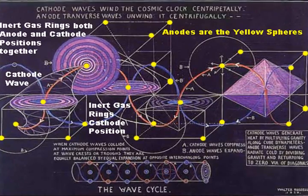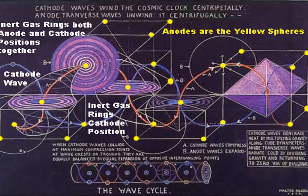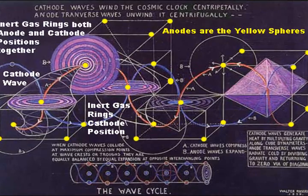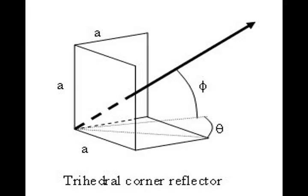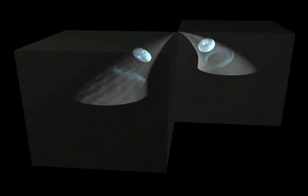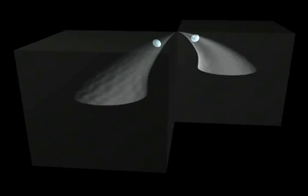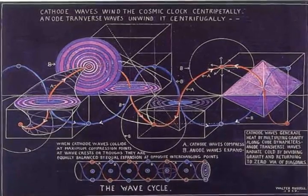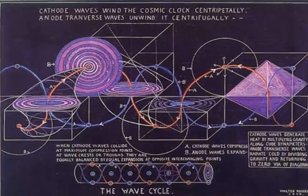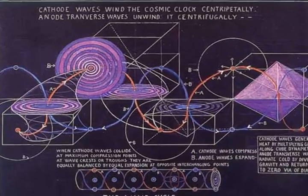These motions create atomic centers in neighboring wave fields as well. The eight corners of each cube act as trihedral corner reflectors to bend spiraling cathode wave lights inward towards apices, which are the centers of other anode-cathode centers, as seen in the vertical purple bullseye face in this image.